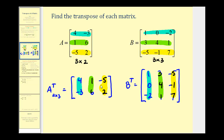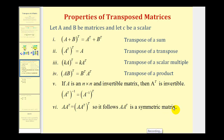Now let's talk about the properties of transposed matrices. Property one: the transpose of the sum of matrix A and B is equal to the transpose of matrix A plus the transpose of matrix B. Property two: the transpose of the transpose of matrix A is just equal to matrix A. Property three: the transpose of a scalar times matrix A is equal to the scalar times the transpose of matrix A. Property four: the transpose of matrix A times matrix B is equal to the transpose of matrix B times the transpose of matrix A.